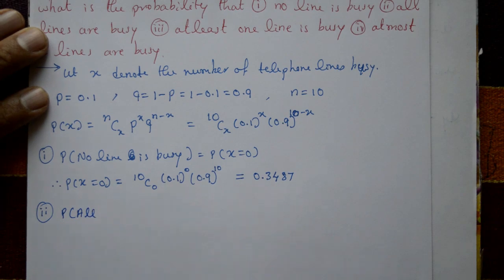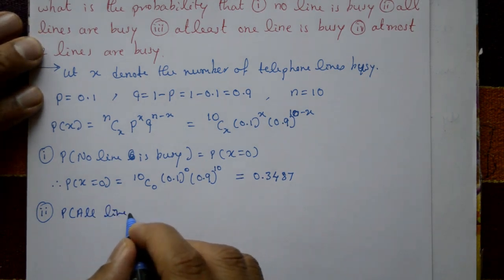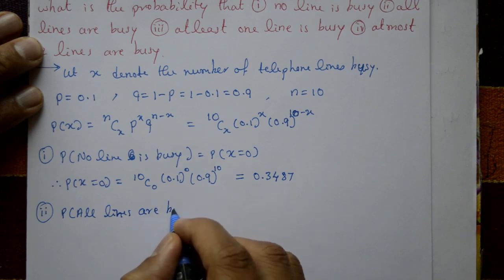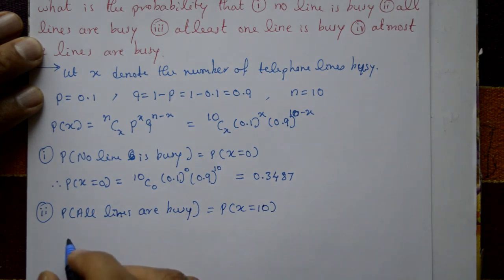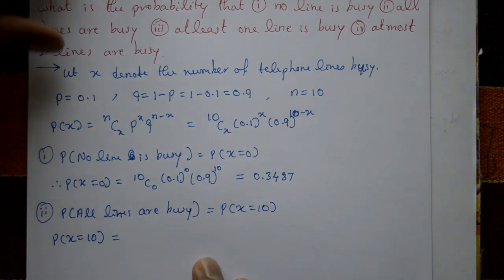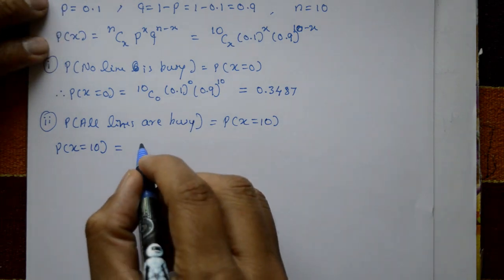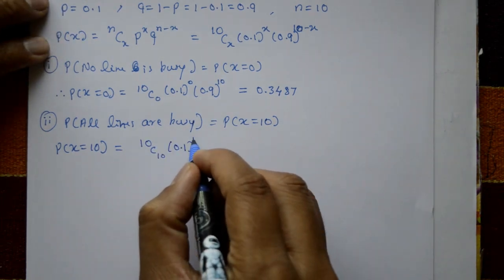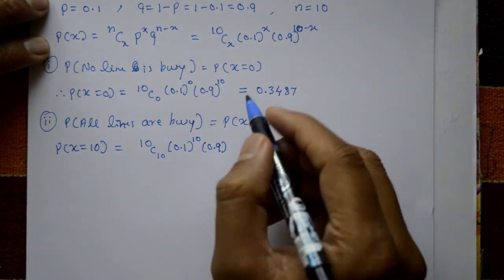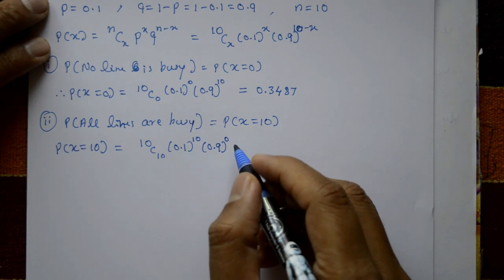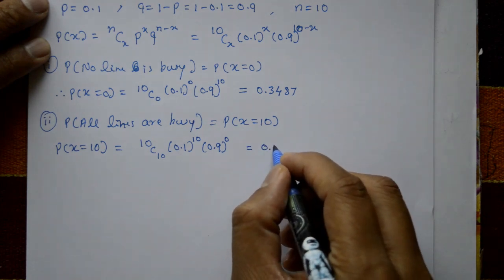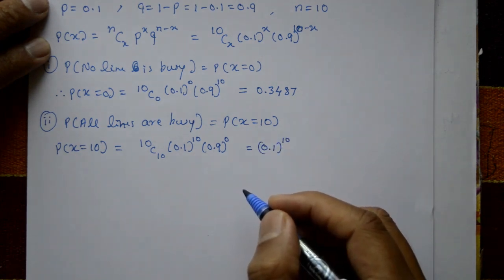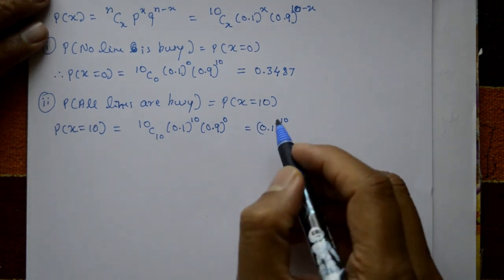Case 2: All lines are busy means P(X = 10). Substituting x = 10: 10C10 · (0.1)^10 · (0.9)^0 = (0.1)^10.